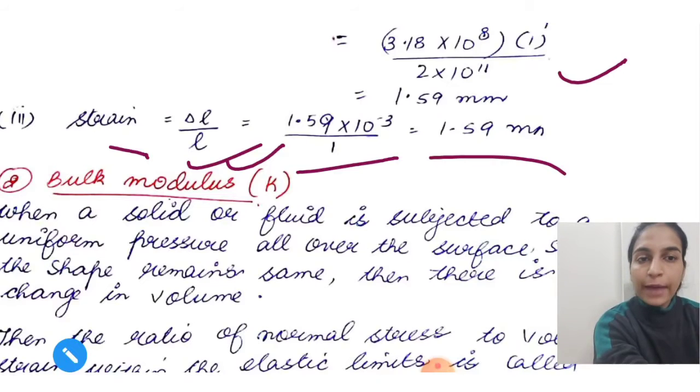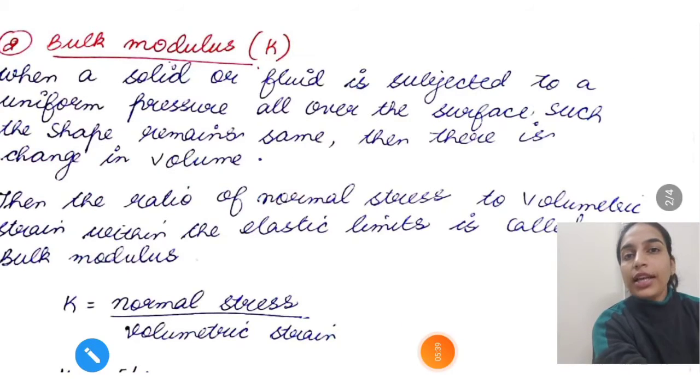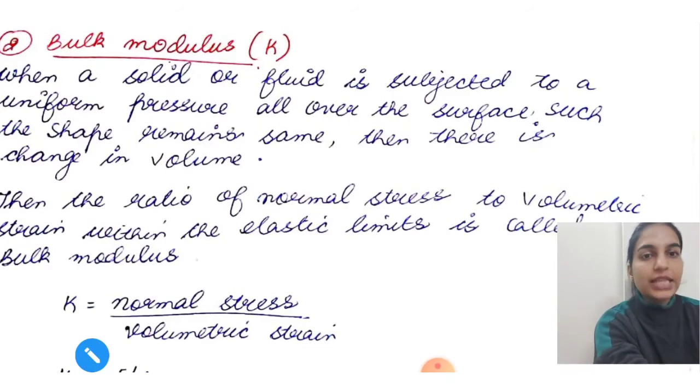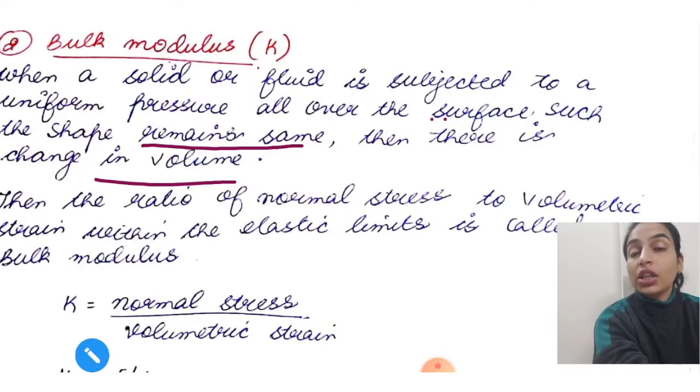Next is bulk modulus. From the name you can tell that the stress and strain involved here will be related to bulk, which is volume. This means there will be change in volume. When a solid or fluid is subjected to a uniform pressure all over the surface such that the shape remains the same but there is change in the volume - in bulk this is what happens, volume changes but shape doesn't change.